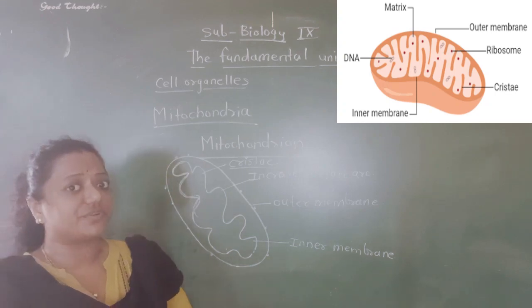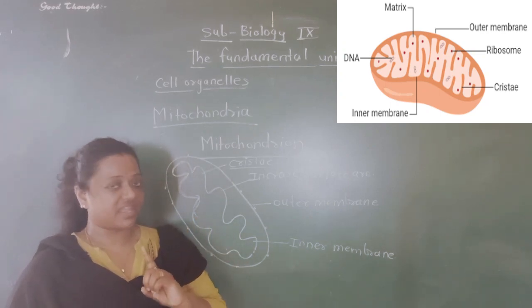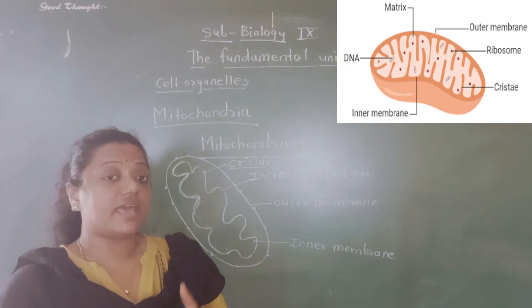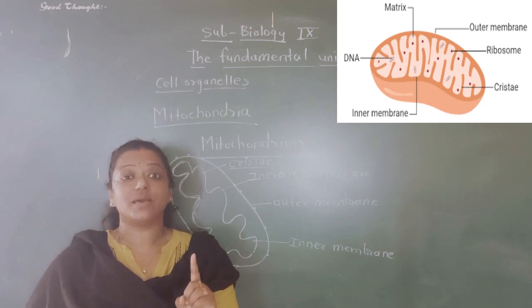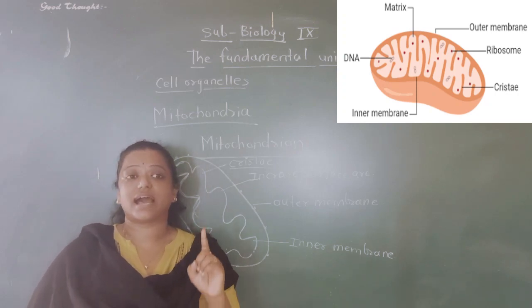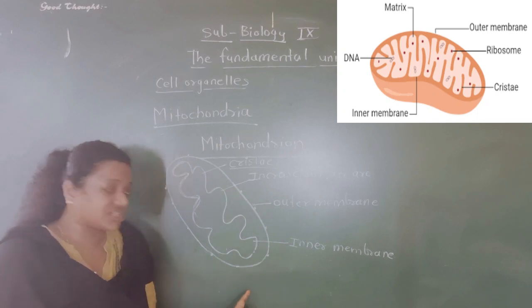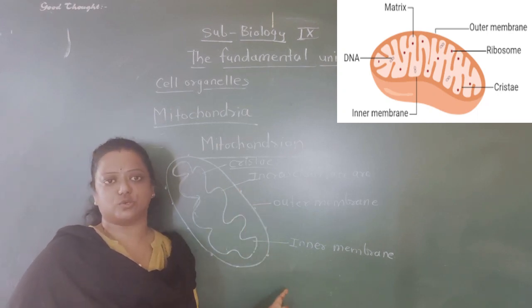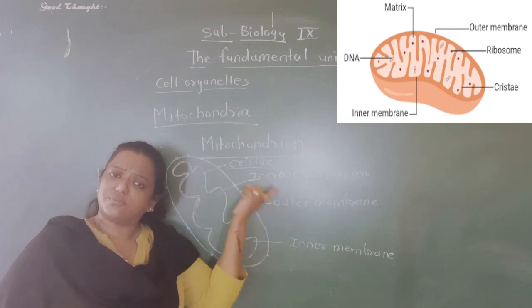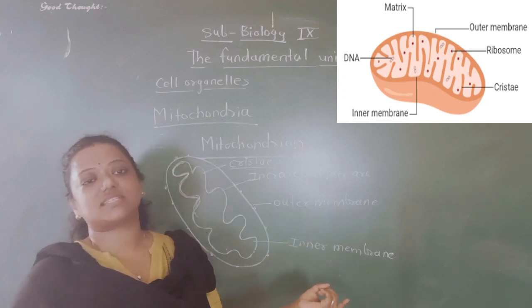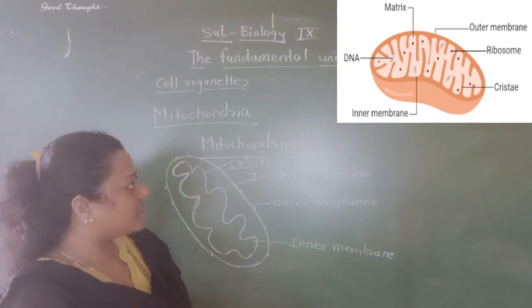Now, if we talk about the function, one more thing: mitochondria contains its own ribosome and DNA. The ribosome is the protein factory of the cell — ribosomes produce protein needed for the cell. This structure has its own ribosomes, so its protein requirement is fulfilled by itself. Therefore, this mitochondria structure is called autonomous.